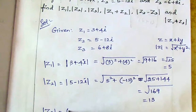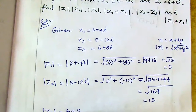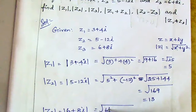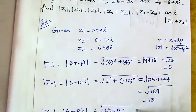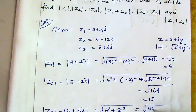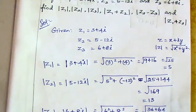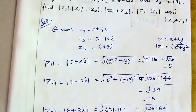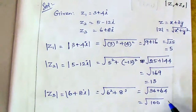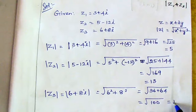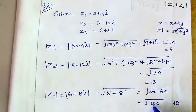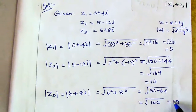For z3, the value is 6 plus 8i, so modulus of z3 is square root of 6 squared plus 8 squared. 6 squared is 36, 8 squared is 64. Adding them gives 100, so square root of 100 is equal to 10. So modulus of z3 is equal to 10.